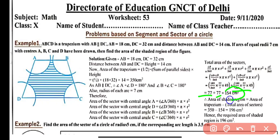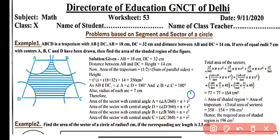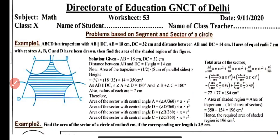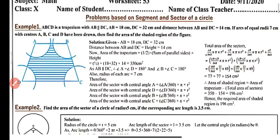Area of shaded region = Area of trapezium − Area of four sectors = 350 − 154 = 196 cm². This is the required area.